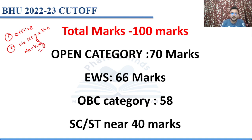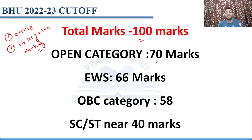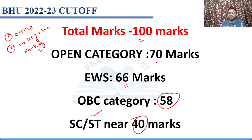Coming to the most important question: what is the cutoff? Total marks are 100. For the open/unreserved category, the cutoff is 70 marks. For EWS (economically weaker section), it's 66. For OBC category it's 58 marks, and for SC/ST it's 40 marks. This is the cutoff you should be aware of.